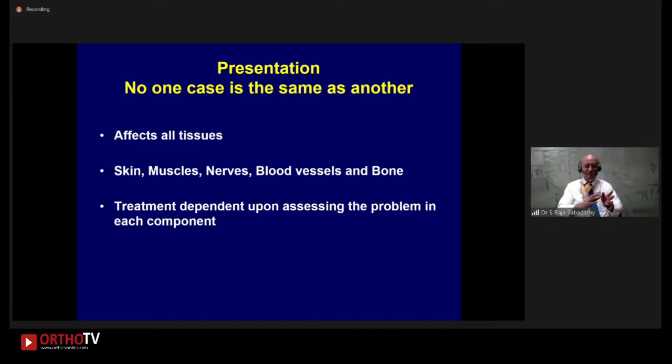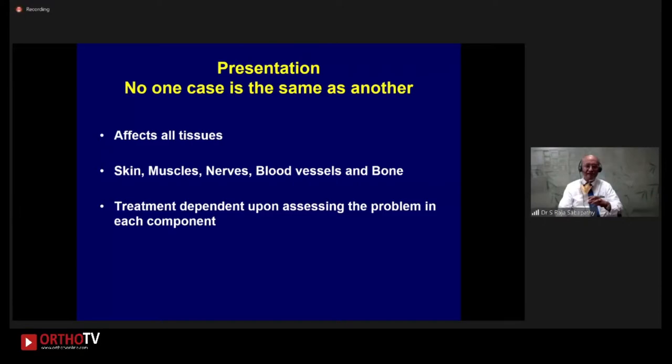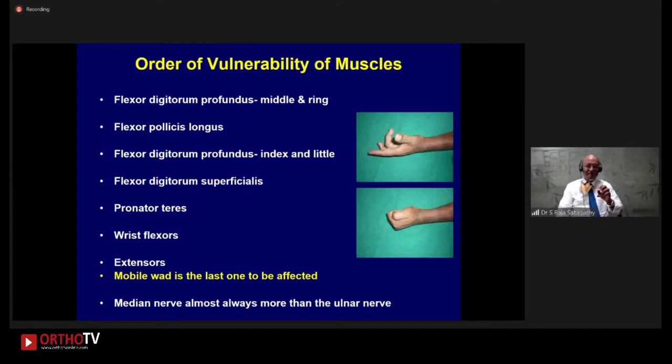Many times I used to think we need to classify them using Sugeist classification or Hold and Sang. But if you really think about how these classifications are going to help us treat the patient, it's very difficult. What we have to do is just think: what has all got affected? Everything can get affected in Volkmann's. I go through skin, then muscles, then nerves, then whether there's a pulse in the hand, and how is the bone. The treatment depends upon assessing the problem in each component and addressing that component to the best of our ability.